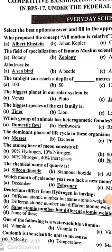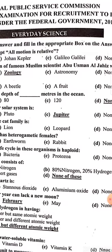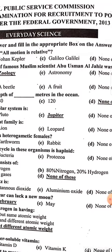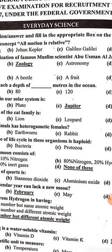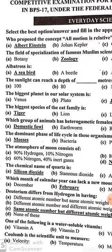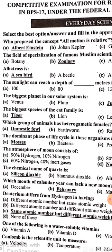Hello guys, this lecture is related to Everyday Science. The lecture covers solid MCQs of the 2013-14 and 2015 CSS paper. Let's begin. Question number one: who proposed the concept that all motion is relative? It was proposed by Albert Einstein.